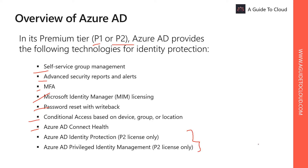In addition to these Azure AD P1 features, the Azure AD P2 license provides a number of advanced functionalities. The first one is Azure AD Identity Protection, which is a P2 license feature. It provides enhanced functionalities for monitoring and protecting user accounts. You can define user risk policies and sign-in policies, and review user behavior and flag users for risk.